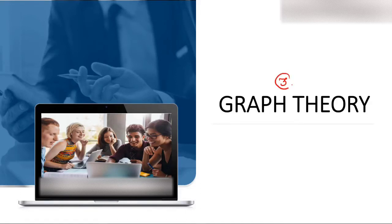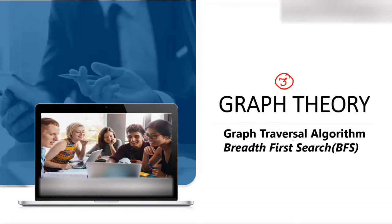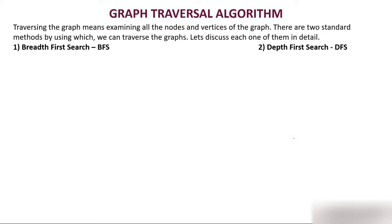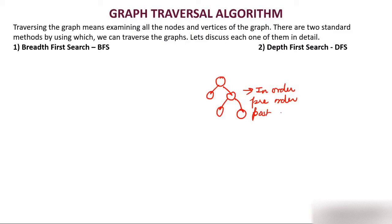Today we are discussing the third video on graph theory, which is on graph traversal algorithms — specifically breadth first search. Graph traversal means examining all the nodes and vertices of a graph. Similar to tree traversal (in-order, pre-order, post-order), we can traverse a graph. There are generally two methods: BFS (breadth first search) and DFS (depth first search).